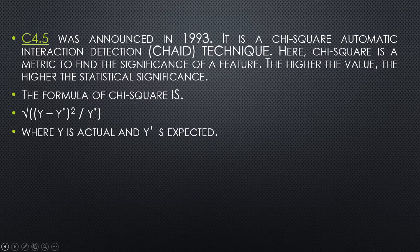The chi-square formula is: square root of (Y minus mean of Y) whole square, divided by the mean of Y. Here, Y is the actual value and the mean of Y is the expected value.